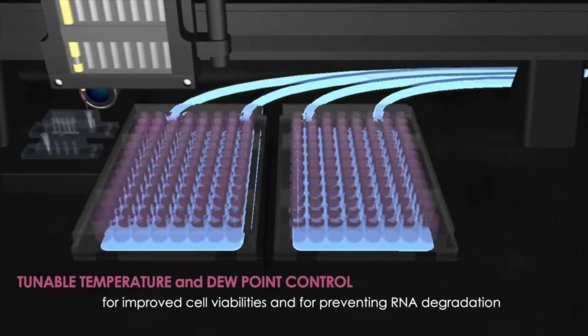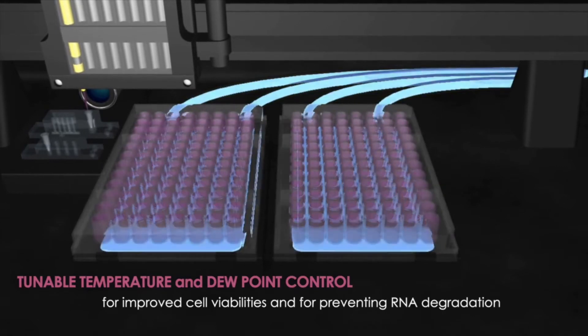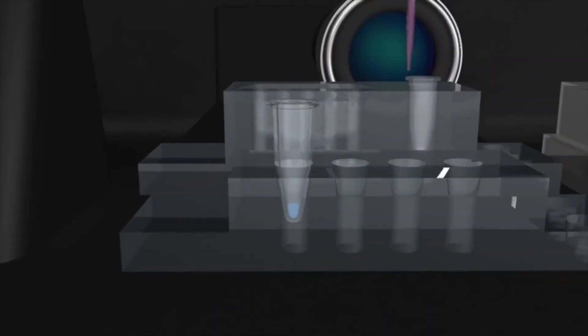Inside the Cell-in-1, humidity and temperature can be controlled to optimize processing conditions, prevent sample evaporation, and maximize cell viability.